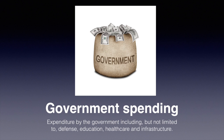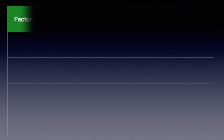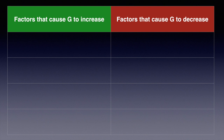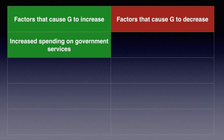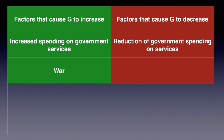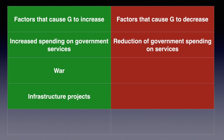Government spending falls under fiscal policy. When the government is pursuing expansionary fiscal policy, they will increase spending and reduce taxes. For government spending as a component of aggregate demand, we focus on expenditure — which includes many areas such as government services, war, and infrastructure projects. An increase in government spending will result in an increase in aggregate demand, and we'll explore this further in the video on fiscal policy.